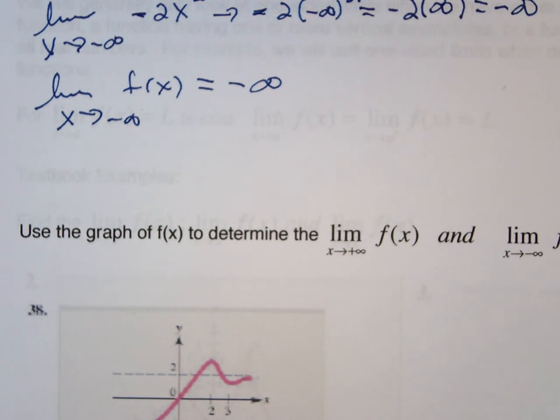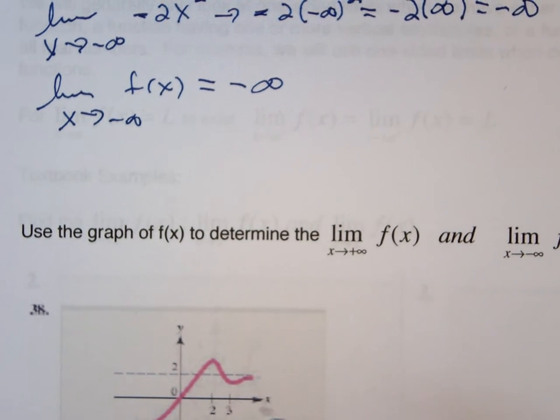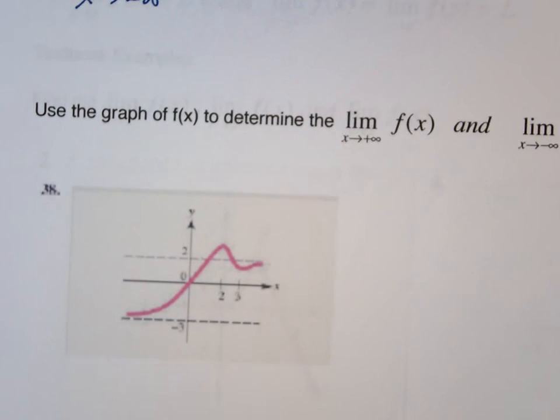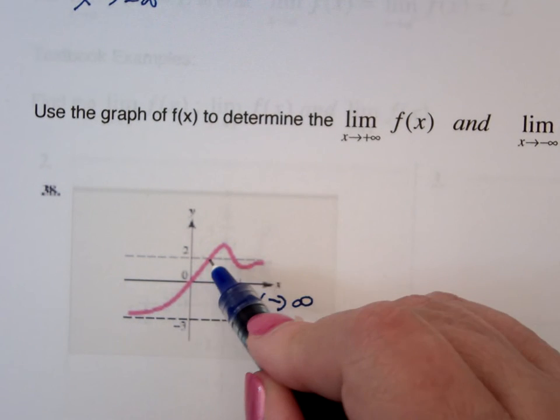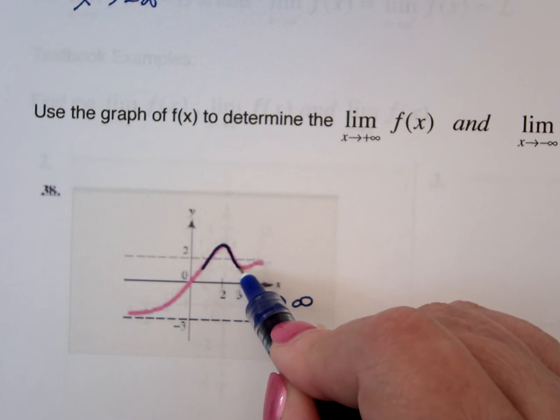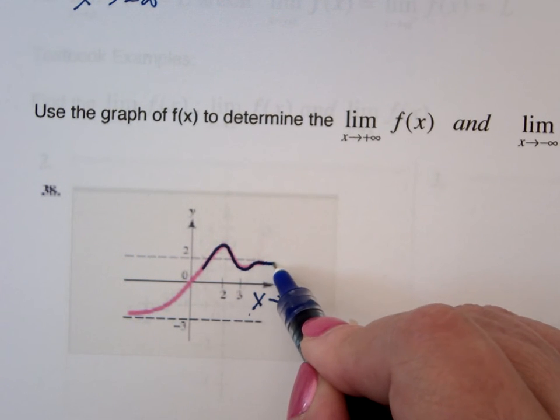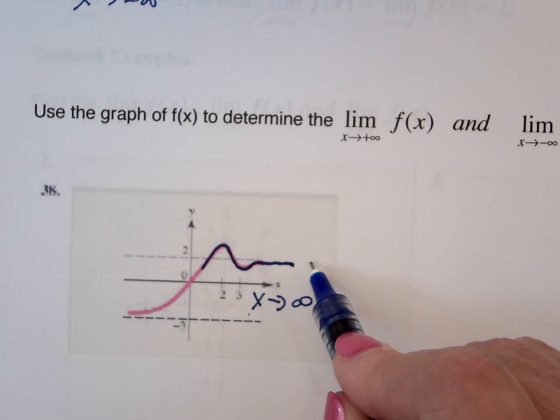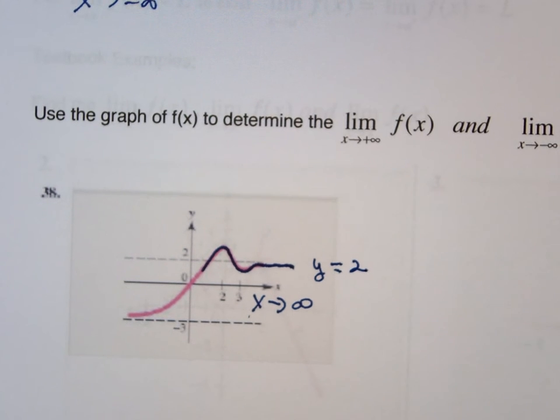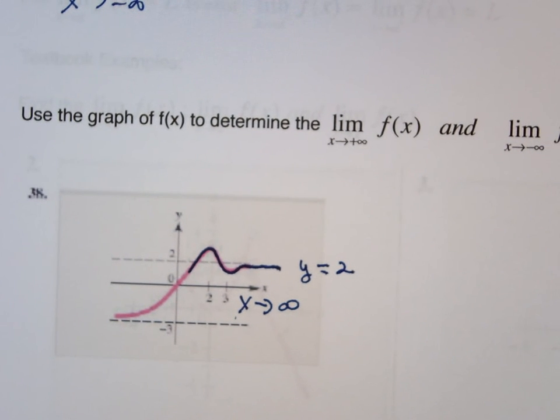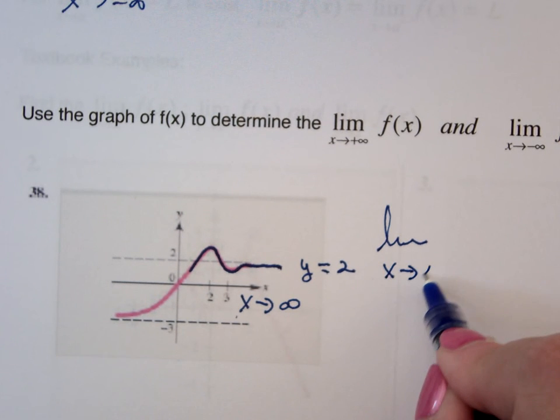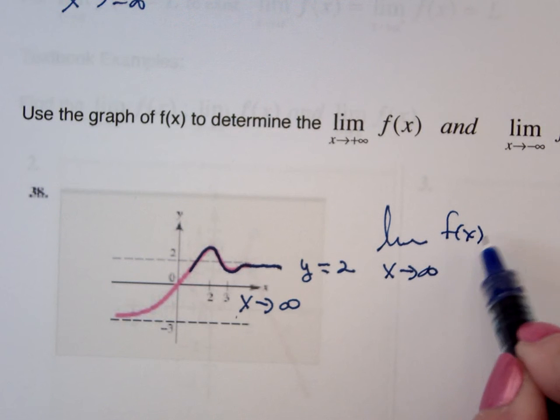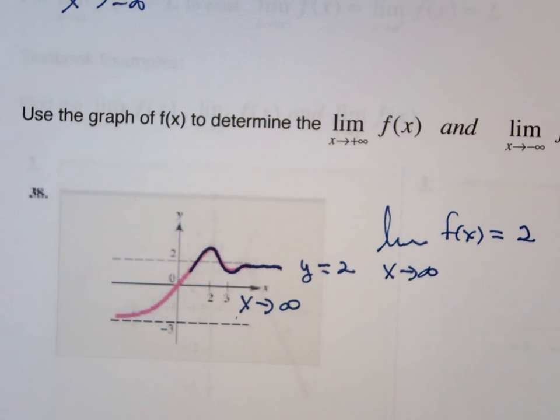You're going to ride along to see what happens. And if I'm going to take a look at as x goes to infinity, I'm riding along, riding along, riding along, and it looks like it almost levels off. And it levels off where? At y equals 2. So we're going to say that the limit as x goes to infinity of this graph of f of x is 2. It's a horizontal asymptote.